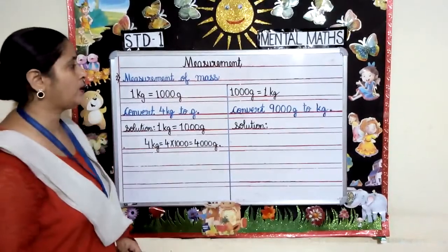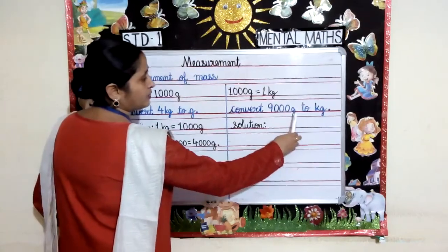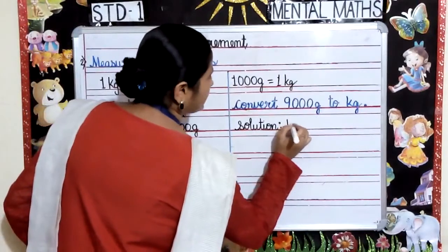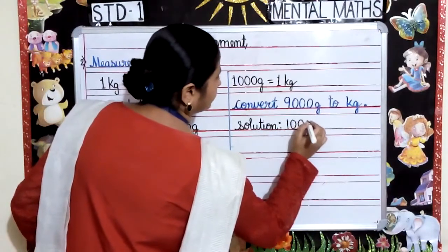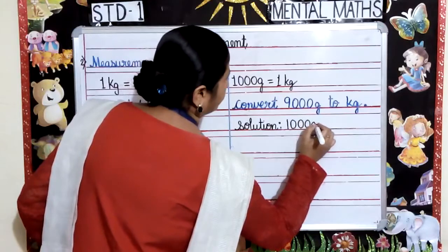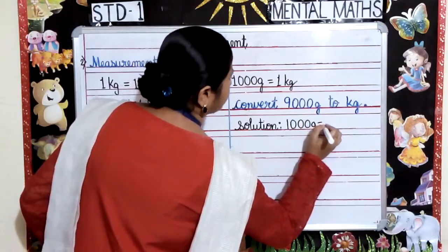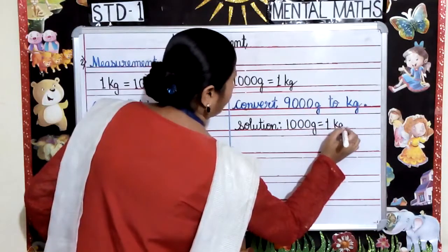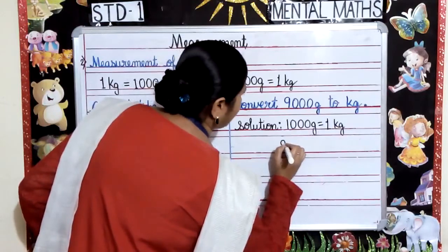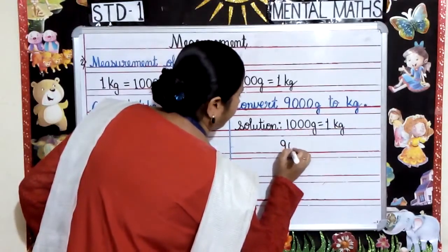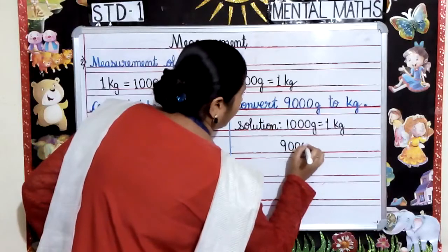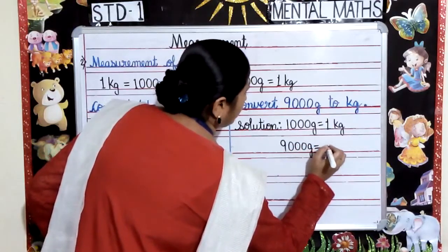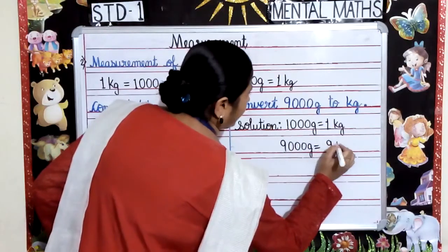Now let's convert 9000 grams to kilograms. Solution: 1000 grams is equal to 1 kilogram. So 9000 grams is equal to 9 kilograms.